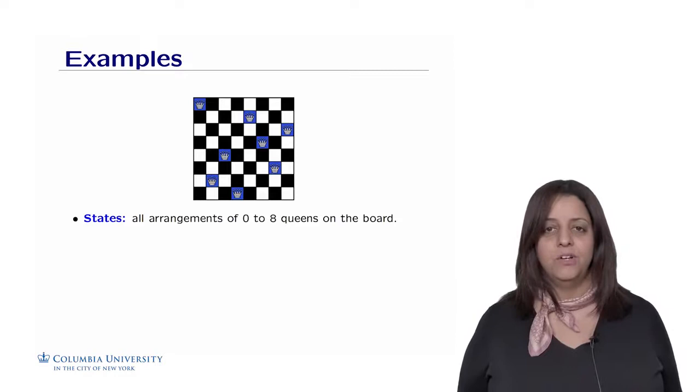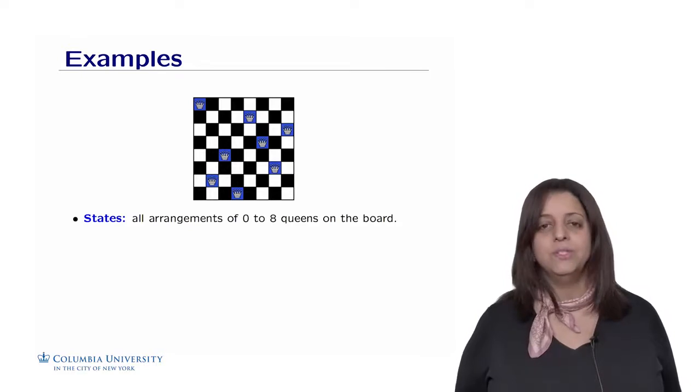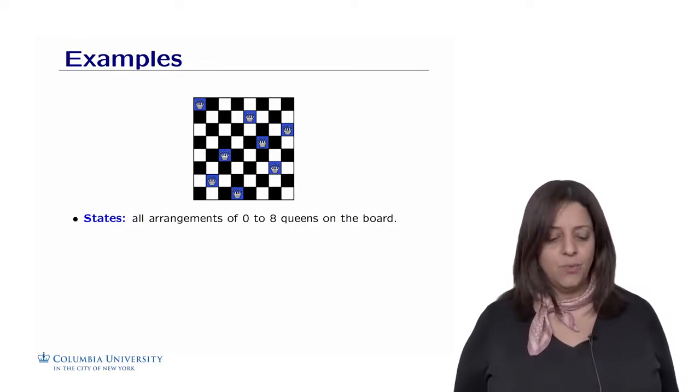And the players take turns putting the queen on the board. And the goal is to have a board with 8 queens on the board, where no one is attacking another one diagonally, vertically, or horizontally.